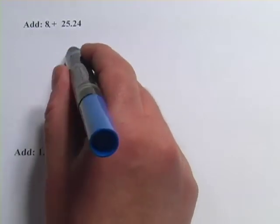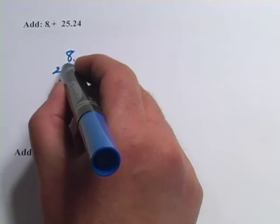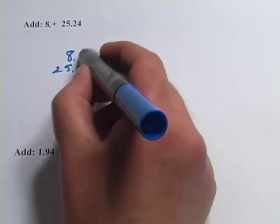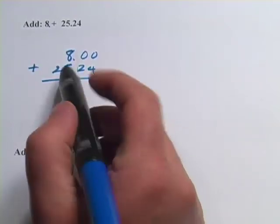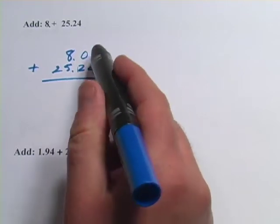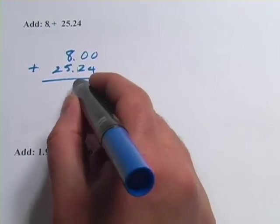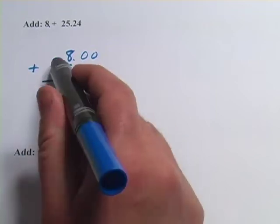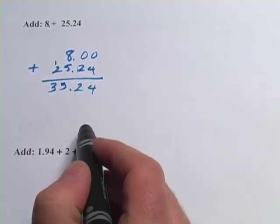So when we line it up to add, we'd have 8 point whatever and 25.24, and what I'm going to do is fill in here with trailing zeros, just to make it look all neat and nice. 8.00 is the same thing as 8, so we can do that. And now we can just add this like a normal addition problem: 0 plus 4 is 4, 2 plus 0 is 2, bring down my decimal point, 8 plus 5 is 13, carrying the 1, we get 33.24.